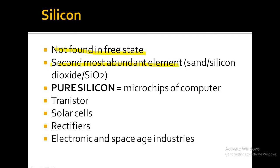Silicon is the second most abundant element — the first most abundant element is aluminum. 'Most abundant' means found in greater quantity compared to other elements. Silicon is the second most abundant because it is found in sand. The chemical name for sand is silicon dioxide, and its chemical formula is SiO₂.